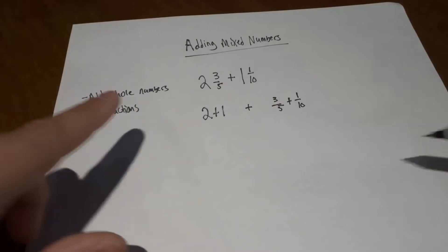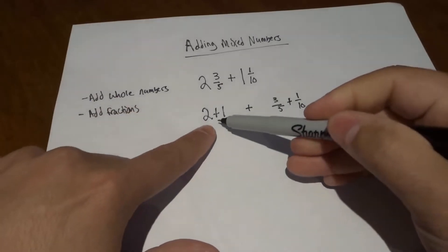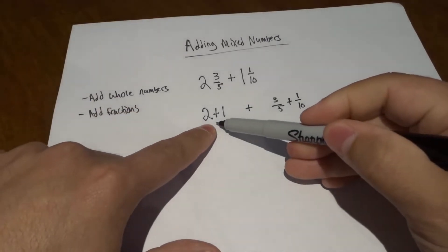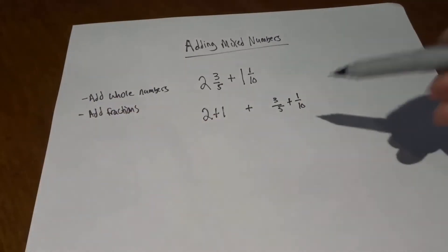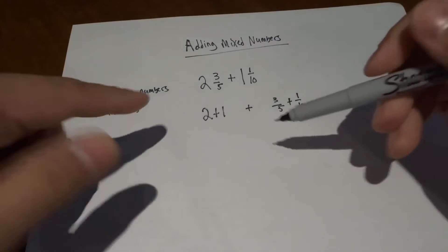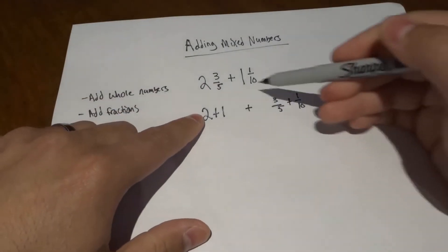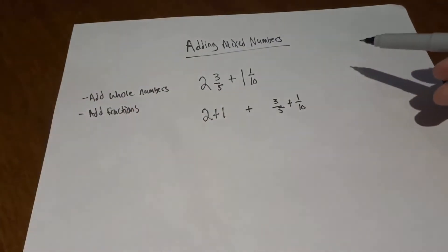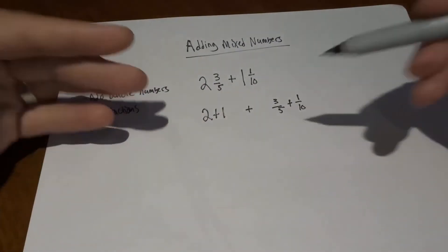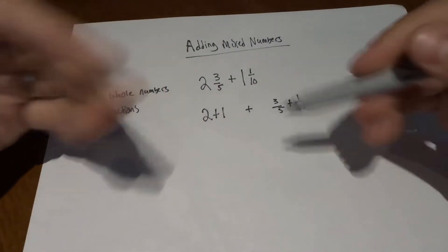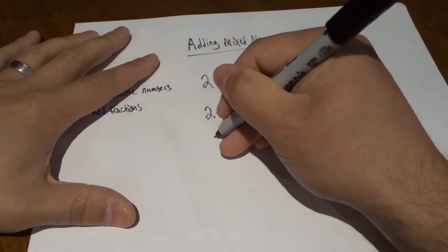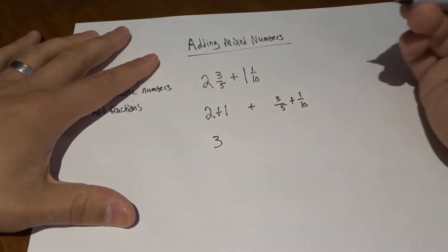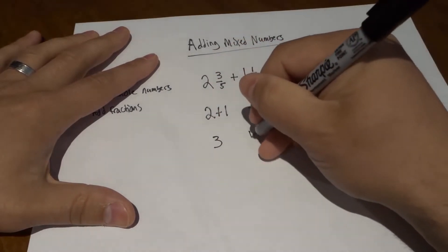As you can see right here, we have added the whole numbers and we've added the fractions. We haven't actually solved it yet, but this is the start of the process. Two plus one is going to be three, which is fairly simple.